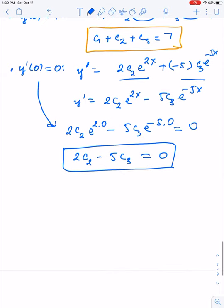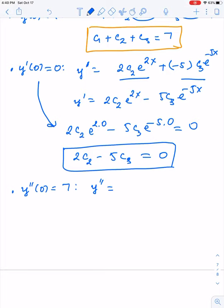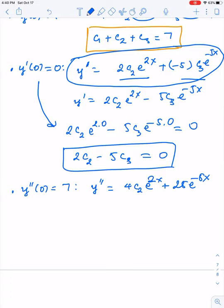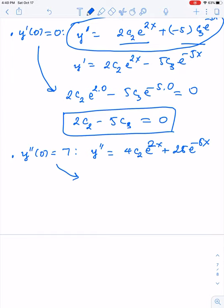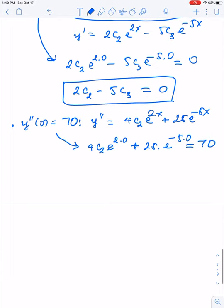The last one: y''(0) = 7. To use this condition, we need y'', which is the derivative of y'. Taking the derivative, we get y'' = 4c2*e^(2x) + 25c3*e^(-5x). Now using the initial condition, we have 4c2*e^0 + 25c3*e^0 = 70, which means 4c2 + 25c3 = 70. This is the third equation.